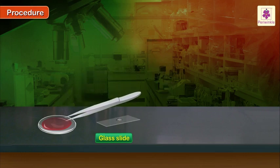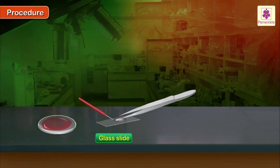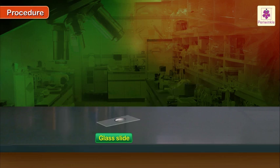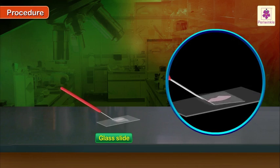Use forceps to transfer the stained peel to the glycerin with the support of the needle pointer. Carefully place a coverslip over the specimen such that no air bubbles get trapped.